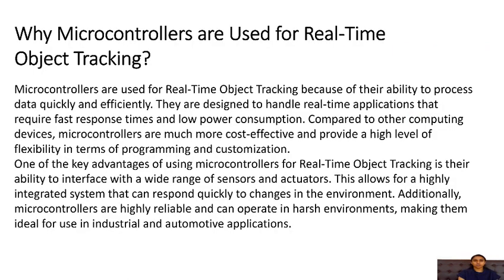Why are microcontrollers used for real-time object tracking? Microcontrollers are used because of their ability to process data quickly and efficiently. They are designed to handle real-time applications that require fast response times and low power consumption. Compared to other computing devices, microcontrollers are cost-effective and provide a high level of flexibility in terms of programming and customization. One key advantage is their ability to interface with a wide range of sensors and actuators, allowing for a highly integrated system that can respond quickly to changes in the environment.